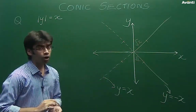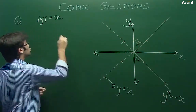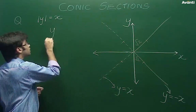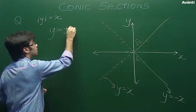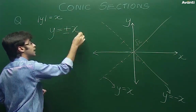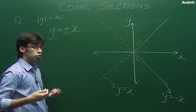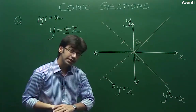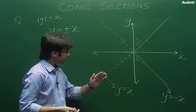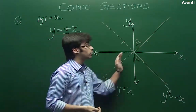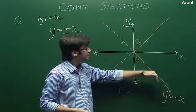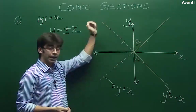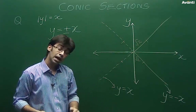If I have mod, I will say that y could be equal to plus or minus x, and here I have two straight lines. One straight line is y = x and one straight line is y = −x.